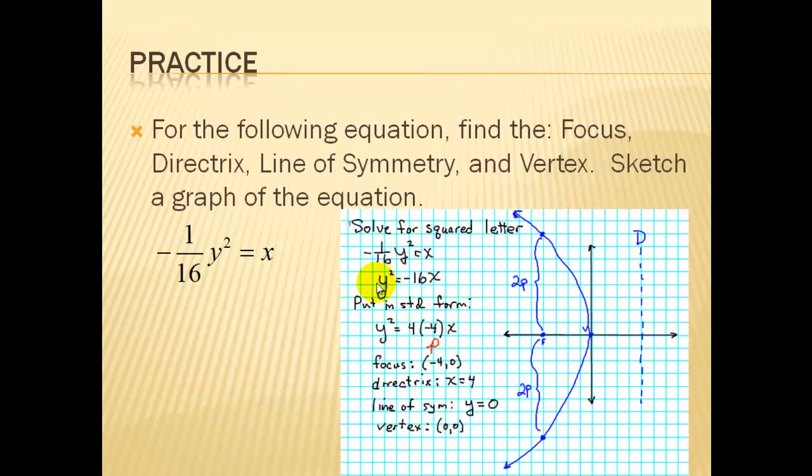So our first step is to write the parabola in standard form. So you can see that here, I multiply both sides by negative 16. And this number we want to break into 2 numbers, 4 times something. And the thing that we would have to multiply it by is the p. So in this case, we have a negative p, which means our parabola is going to open to the left.